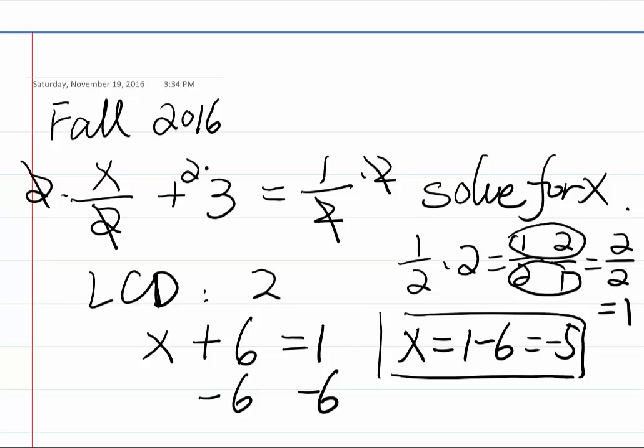But the easiest way to do it is basically, I have 2 over 2, I'm just going to cancel this out. The answer will be 1. Okay.